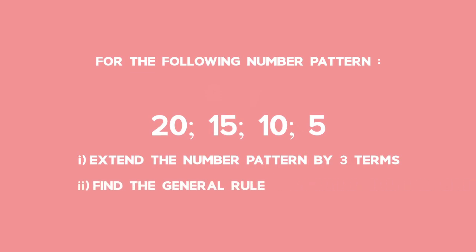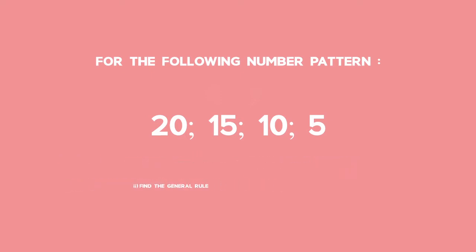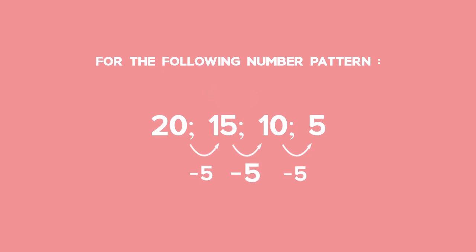For the first part, let's see how we can extend this pattern. To get from 20 to 15, we subtract 5. To get from 15 to 10, we subtract 5. To get from 10 to 5, we subtract 5. We can tell that this is a linear number pattern because there is a constant difference between the consecutive terms.